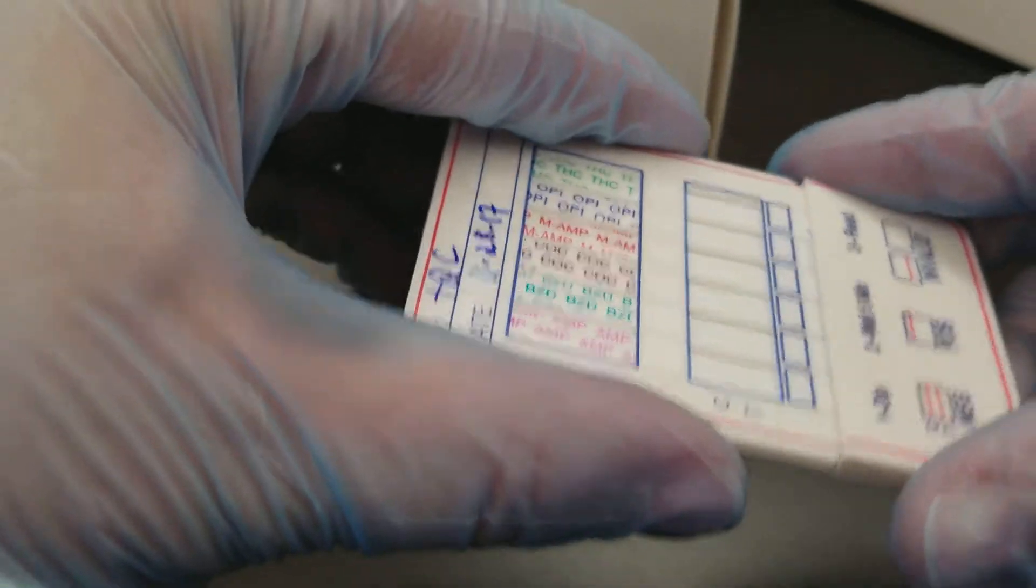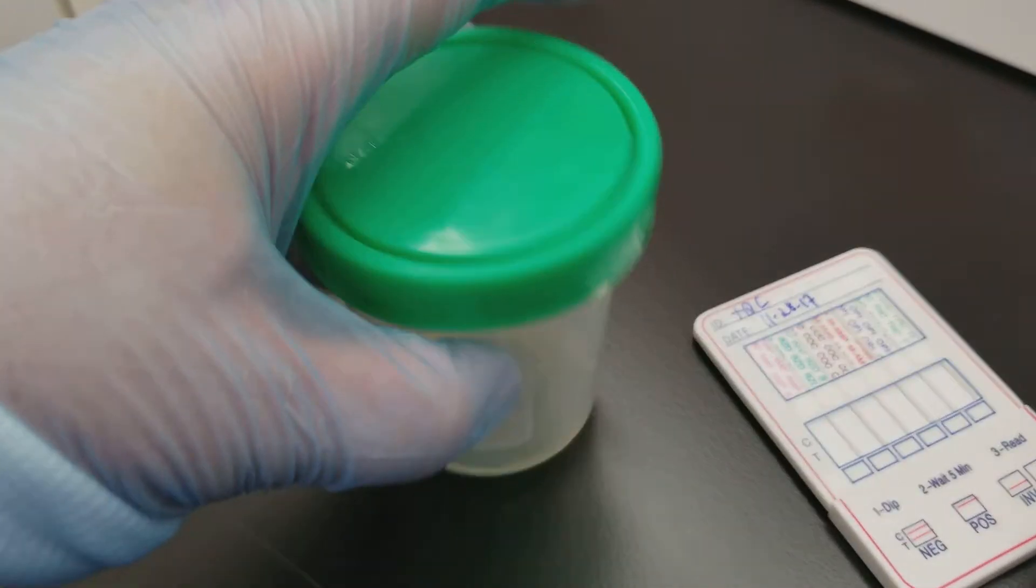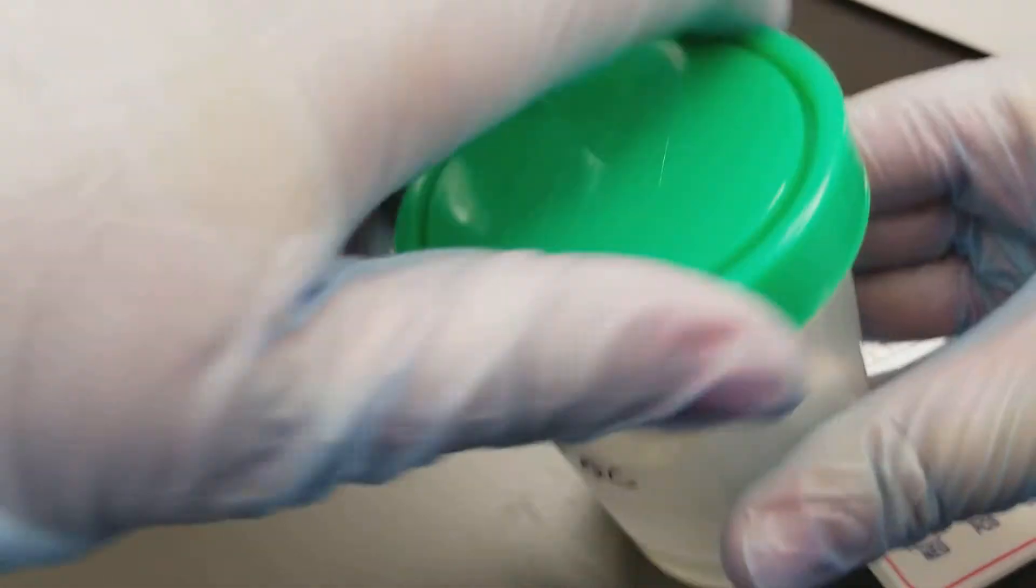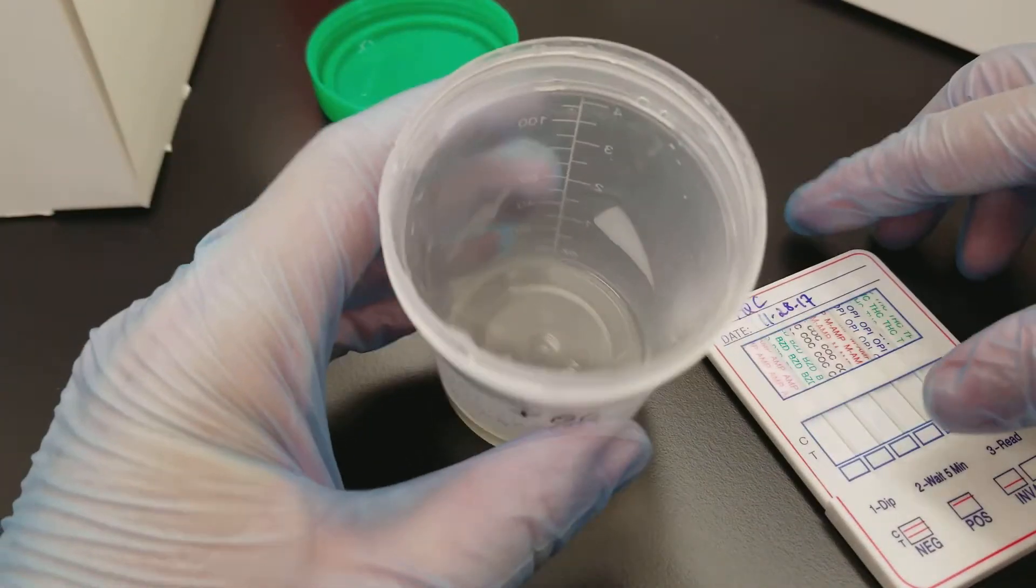We're going to get our specimen ready by making sure that it's swirled. The cap is off. Like I said, this is QC, so it's a very small amount in there.